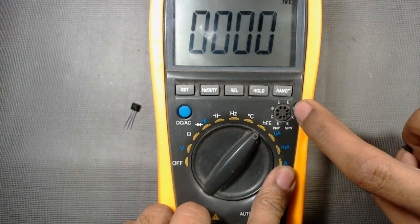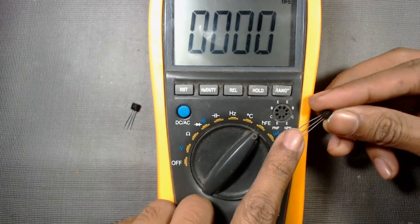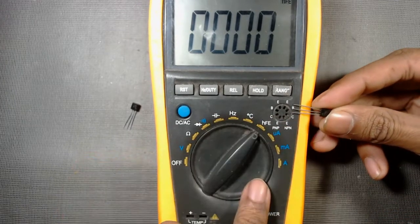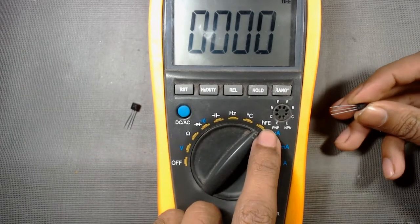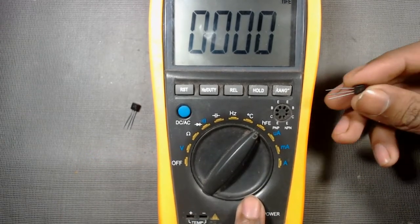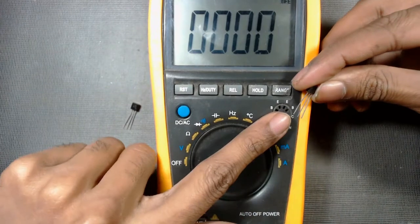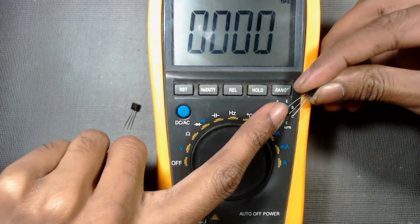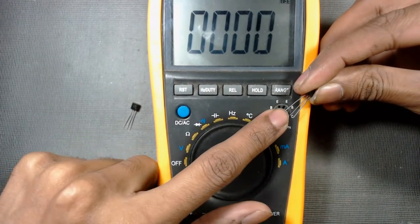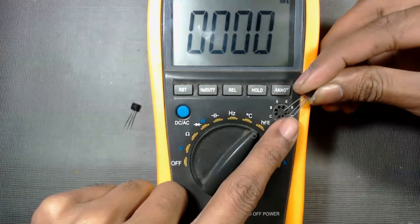base, emitter, or emitter, collector, base. I am using this BC547 transistor to find out the hFE or current gain. For this NPN transistor, the first terminal is collector, then second one is base,